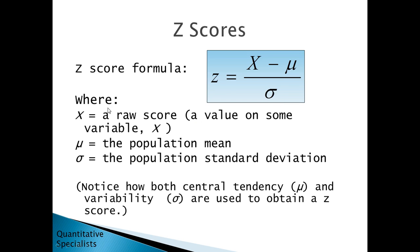Here, x is a raw score or a value on some variable x. Mu is the population mean and sigma is the population standard deviation. Notice that in the z-score formula, both central tendency and variability are used to obtain a z-score.